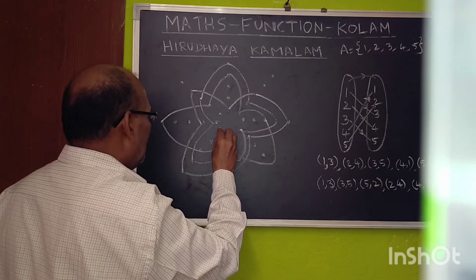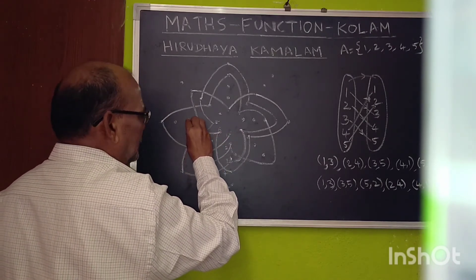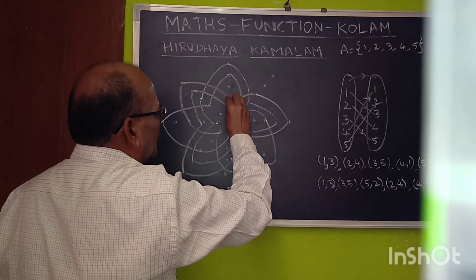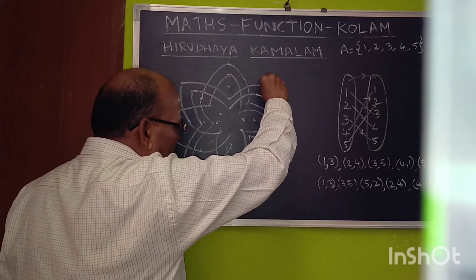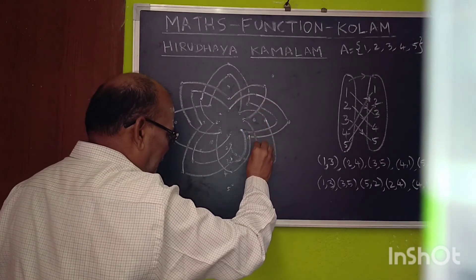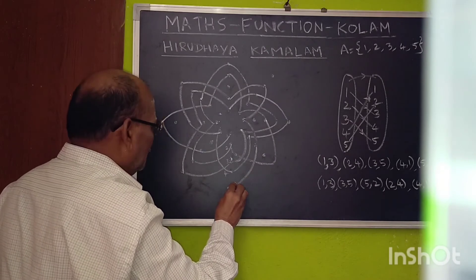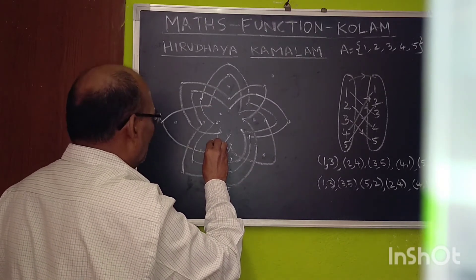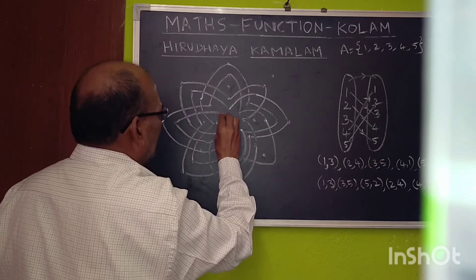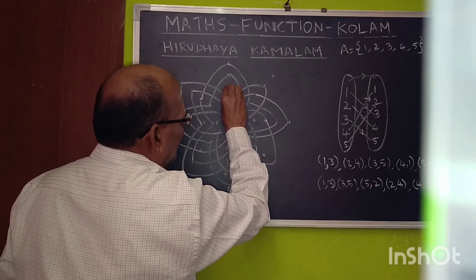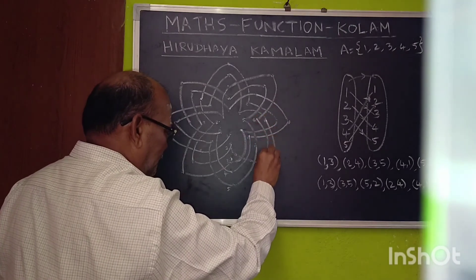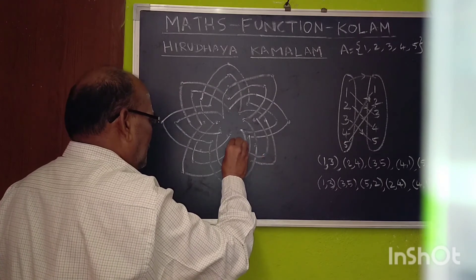Continuing: 1 to 3, 3 to 5, 5 to 2, 2 to 4, 4 to 1. Repeating again: 1 to 3, 3 to 5, 5 to 2, 2 to 4, 4 to 1. All cycles are now completed.